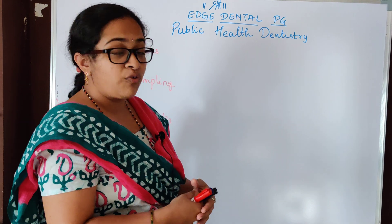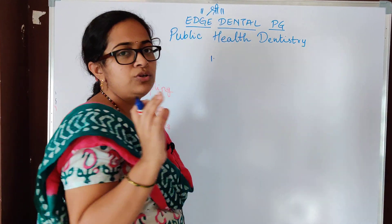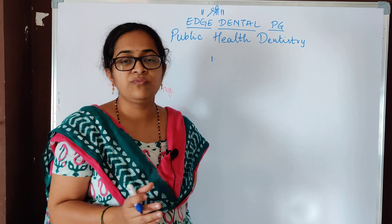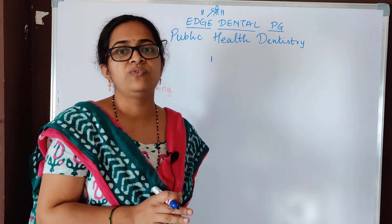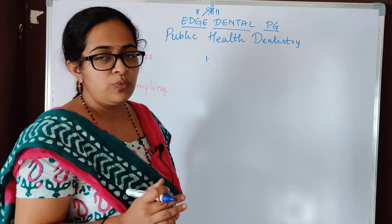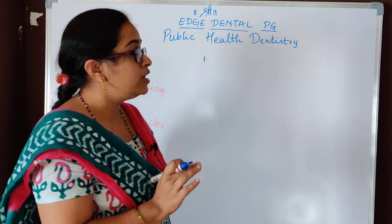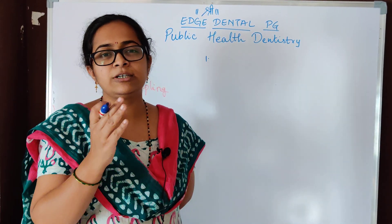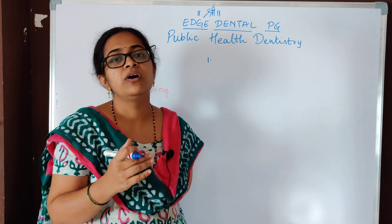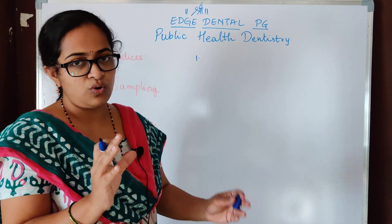Looking at the questions from indices, there were two questions from indices. One question was related to a patient who had conditions related to different varieties of D, M, and F, and the DMFT was to be calculated. This question also had a reference to the year in which modifications of DMFT were given. Based on student recollections, I am discussing the gist of DMFT.